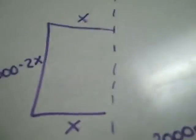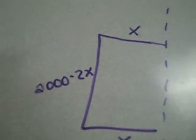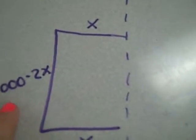and then since the length is the 2,000 meters minus the two x's that you've already used up, the length is 2,000 minus 2x.